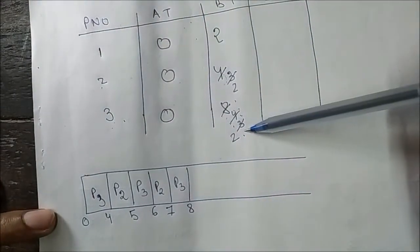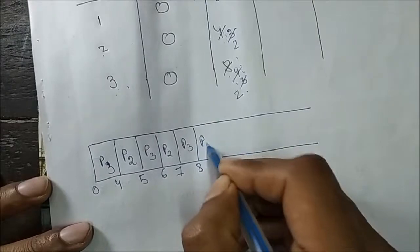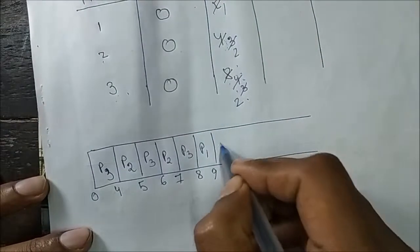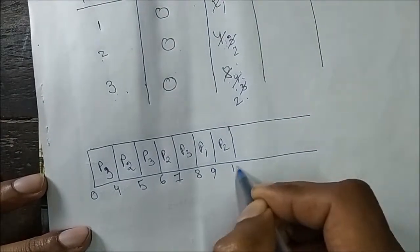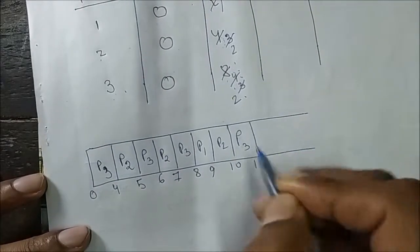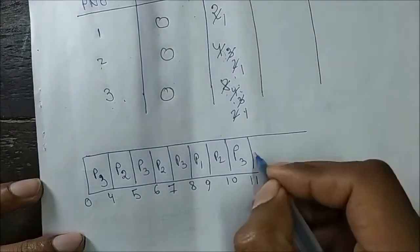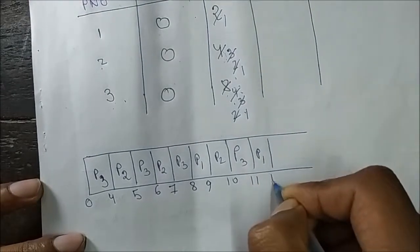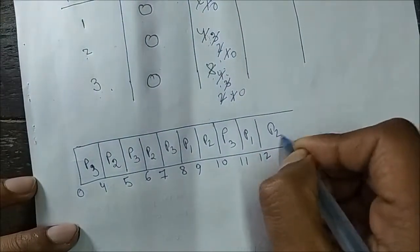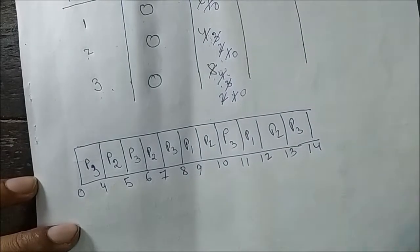Now all three processes — P1, P2, and P3 — have the same remaining burst time of 2. The process with the lowest process ID goes first. So P1 runs for 1 unit (time 9), then P2 runs for 1 unit (time 10), then P3 runs for 1 unit (time 11). Remaining burst times become 1, 1, 1. P1 runs again (time 12, burst = 0), P2 runs (time 13), P3 runs (time 14).